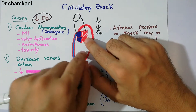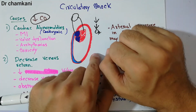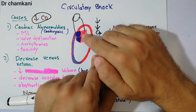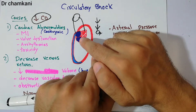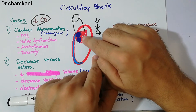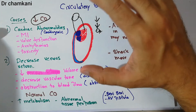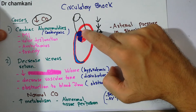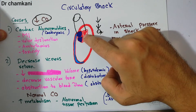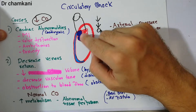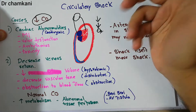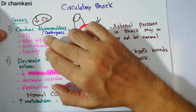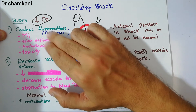The second problem is valve dysfunction. Heart valves allow blood from one chamber into another but do not allow reverse flow. If there is a problem with the mitral valve, aortic valve, or tricuspid valve — for example, stenosis preventing blood from the atria into the ventricle, or from the ventricle into the aorta — then there may be abnormal circulation. Valve dysfunctions also lead to decreased cardiac output and cardiogenic shock.